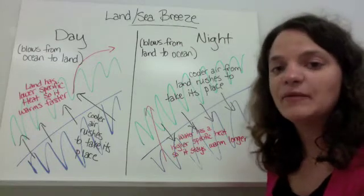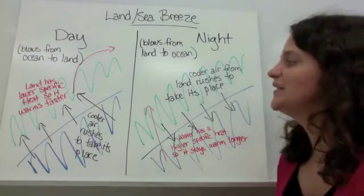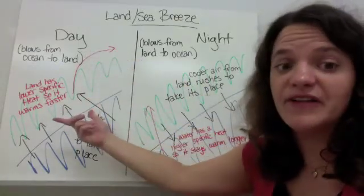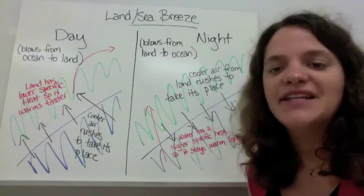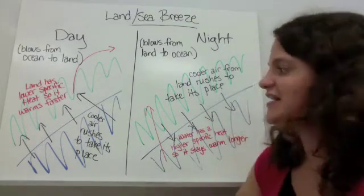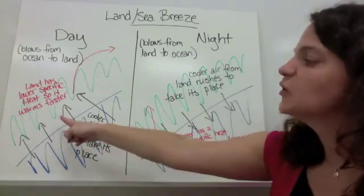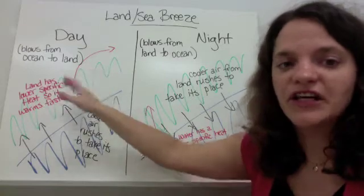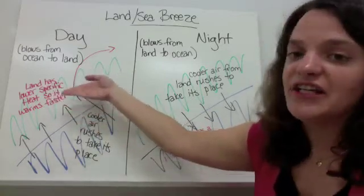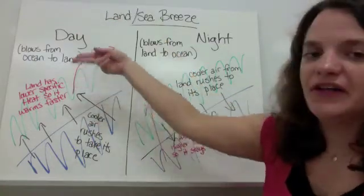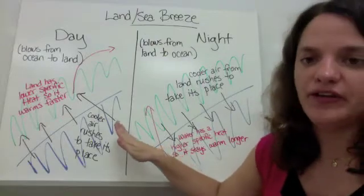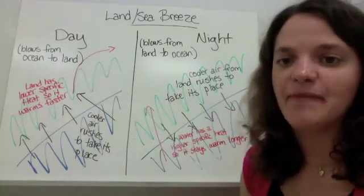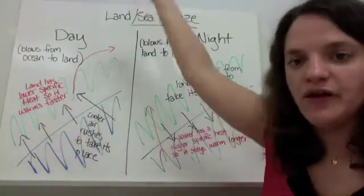One easy example of wind is land and sea breezes, which occur along the coast. During the daytime, land and sand have a lower specific heat than water, so it takes less heat to warm the land to the same temperature. The land heats up more quickly, and through conduction the air above it also heats up, then rises through convection. The cool, dense air over the ocean rushes in to take its place, creating a constant breeze from the ocean to the land during the daytime.